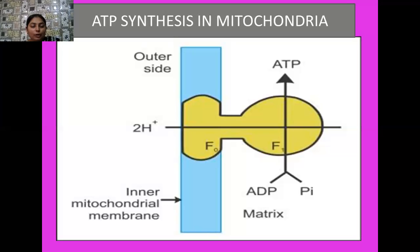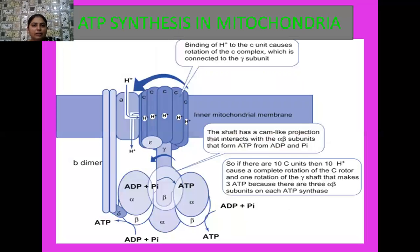The protons are finally accepted by the oxygen molecule and react with it to form water. As a result, at the end of respiration we obtain six molecules of carbon dioxide and 12 molecules of water along with a large amount of energy — 36 ATP. In this way the process of electron transport chain is completed.